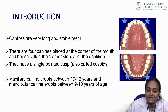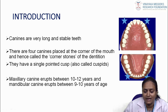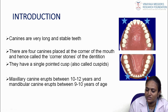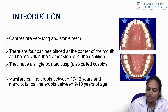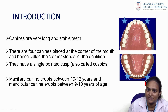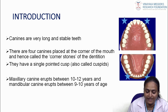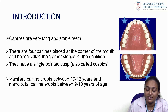Coming to the introduction, canines are very long and stable teeth. There are four canines placed in the corners of the mouth — upper and lower — at the corners of the dentition. They have a single pointed cusp and are also called cuspids. Maxillary canines erupt between 10 to 12 years of age and mandibular canines erupt between 9 to 10 years of age.